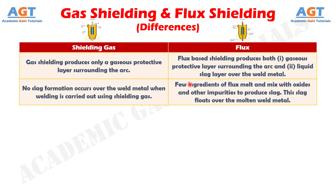Number 2: In gas shielding, no slag formation occurs over the weld metal when welding is carried out using shielding gas. Whereas in flux-based shielding, few ingredients of flux melt and mix with oxides and other impurities to produce slag. This slag floats over the molten weld metal.